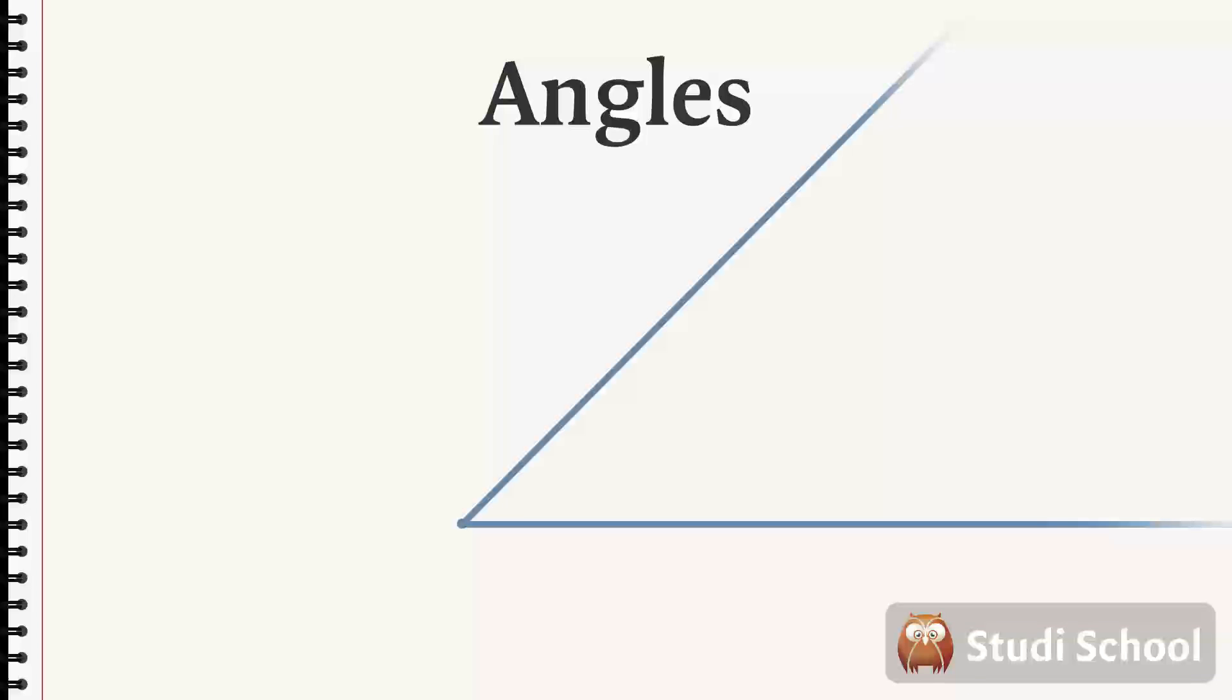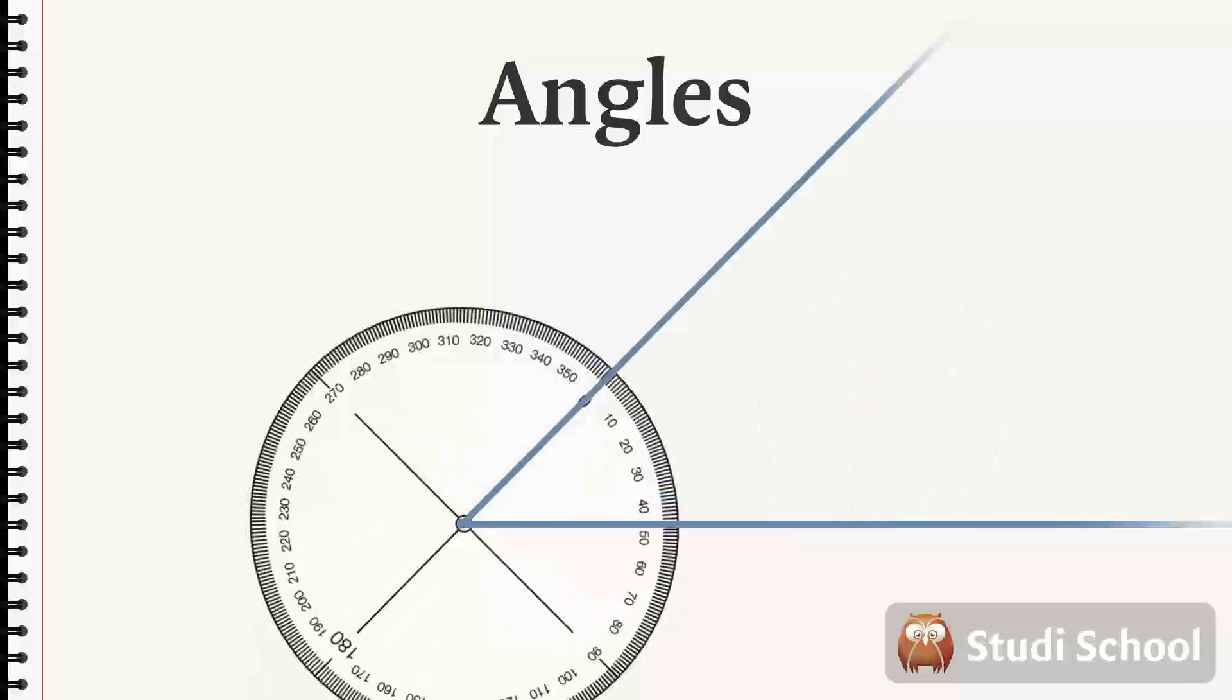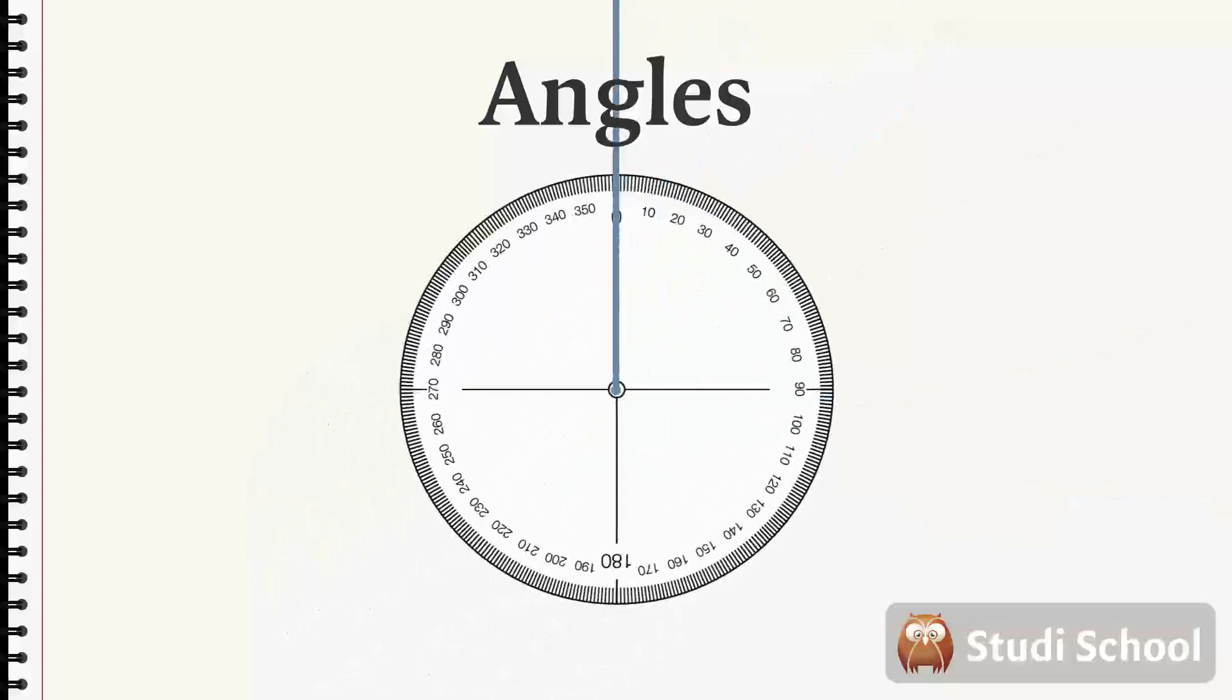When we talk about angles, we call these two rays sides, and to measure the rotation between these two sides, we need a scale to measure it on. Angles are measured on a round scale, in degrees, like this.